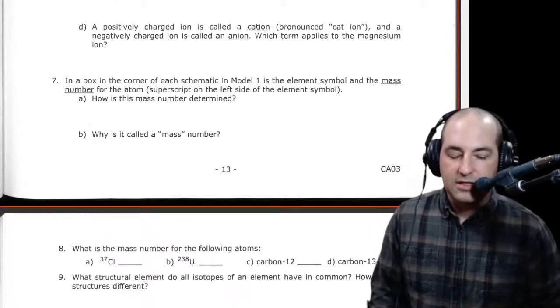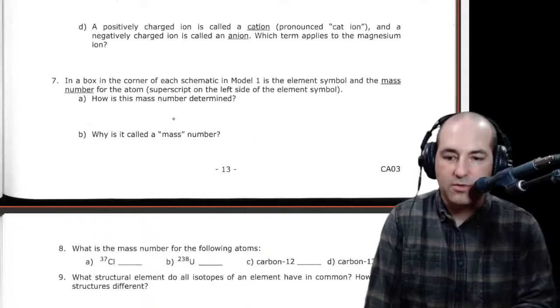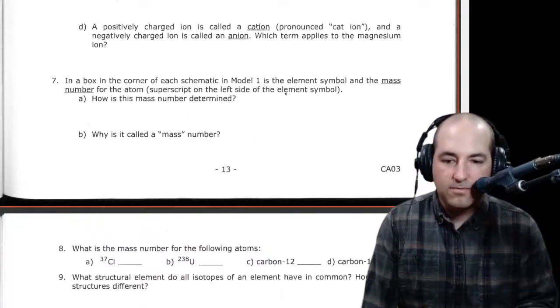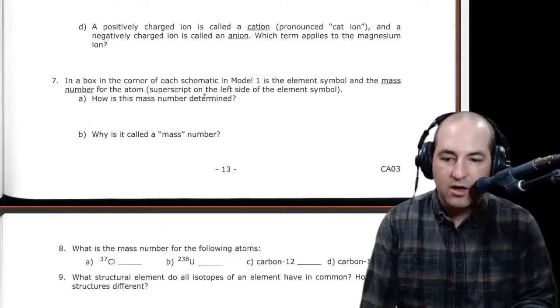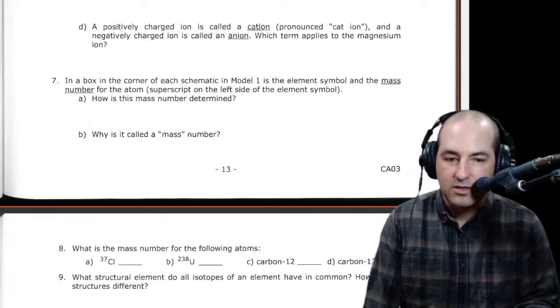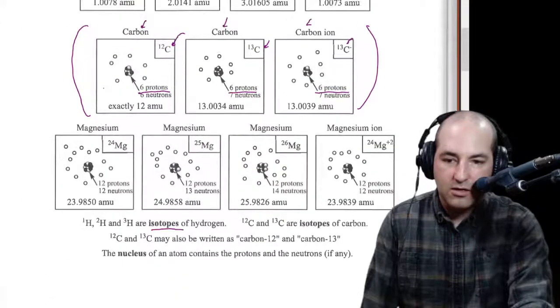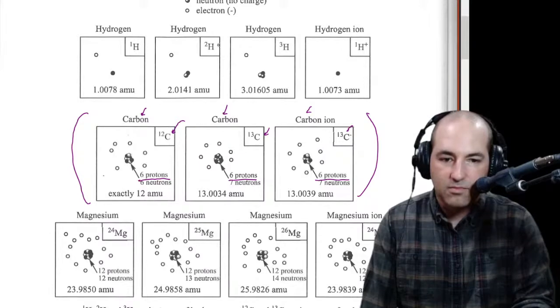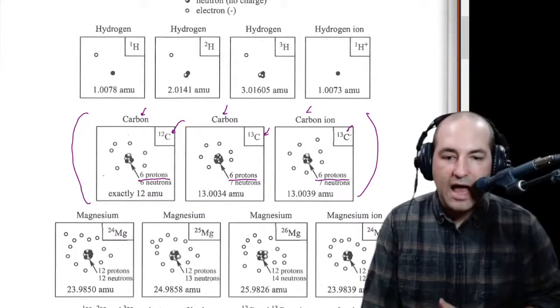The other thing that's important about these is you have to read the questions, because they'll give you some important information. So like for number seven, in a box in the corner of each schematic in model one is the element symbol and the mass number for the atom, superscript on the left side of the element symbol. How is this mass number determined? So let's go back up to that model. And sure enough, yes, we see these symbols, and we see the mass numbers on the left. So we want to know how is that determined.